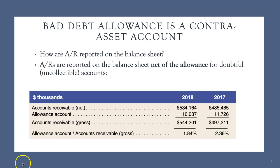First of all, these two accounts are different in nature. The bad debt allowances account is a contra asset account, which means if you look at the balance sheet, the company would report accounts receivable and also record the allowances. So the total accounts receivable for Levi's, for example, is $544.201 million in 2018, the allowances was $10.037 million.